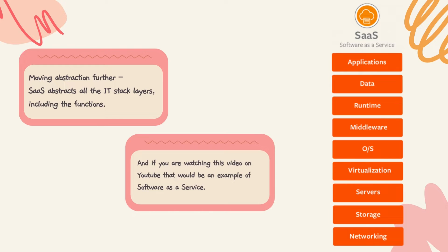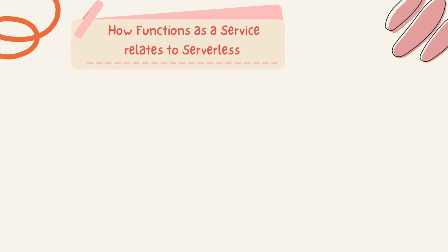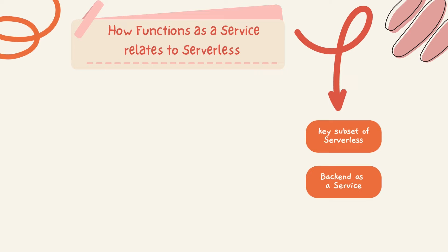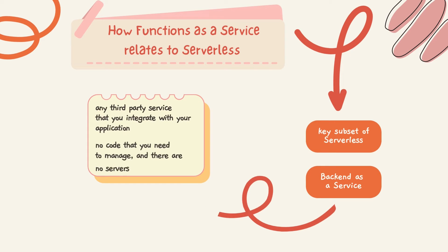Now take a look at how Function as a Service relates to Serverless and its architecture. Function as a Service is actually a key subset of Serverless, as well as Backend as a Service. Backend as a Service is any third-party service that you integrate with your application — there is no code to manage and no servers.